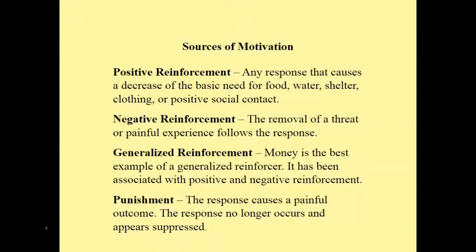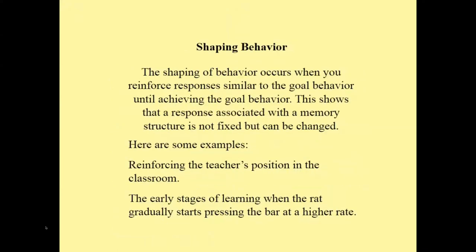Money is the best example of a generalized reinforcer. Money has previously been associated with positive and negative reinforcement. Punishment occurs when the targeted response causes a painful outcome. The response no longer occurs and appears suppressed — jail time following a crime suppresses the criminal response. The shaping of behavior occurs when you reinforce responses similar to the goal behavior until achieving the goal behavior. This shows that a response associated with the memory structure is not fixed but can be changed.